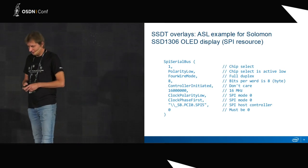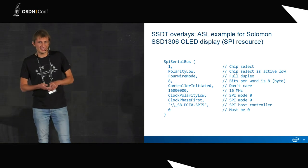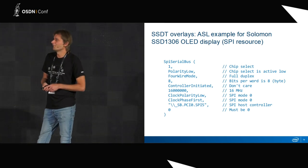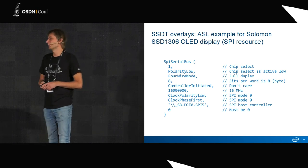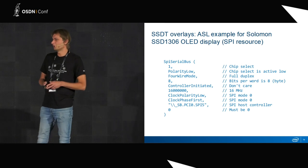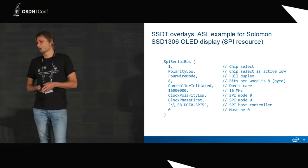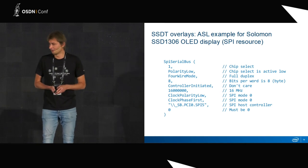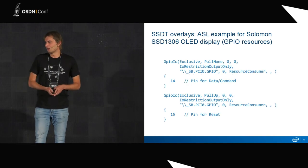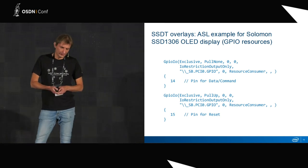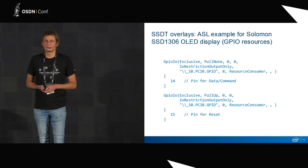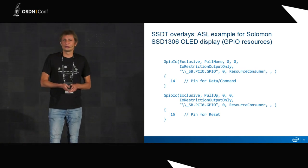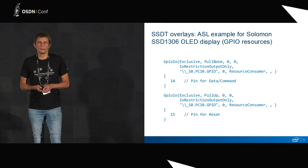For example, let's consider a Solomon OLED display. It's an SPI device, and this is how — according to the ACPI specification — you describe an SPI device. The most important parameters here are chip select, bits per word, also bus speed, and we need to describe to which SPI host controller it is connected. Besides that, we need to provide for this device two GPIO lines: one is the reset line and the other is the data/command line.